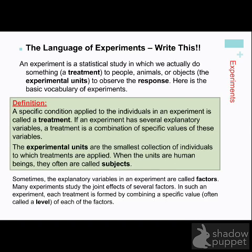Experimental units or experimental subjects are basically the people that are part of the study. If it's an actual person, they are a subject. And if you're testing plants or animals or something like that, they would be considered units. So if I have 30 people in my study, then I have 30 experimental subjects. It's just the phrase for who is actually involved.